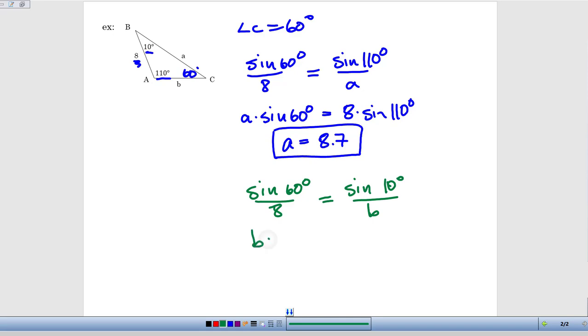Do our cross-multiplying, so we have B times the sine of 60 degrees is equal to 8 times the sine of 10 degrees, and then again, 8 times the sine of 10 degrees, we push buttons on our calculator to get that result, divide that by the sine of 60 degrees, and we get B equals 1.6.